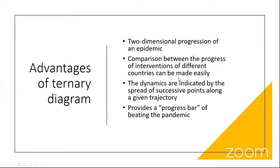What are the advantages of the ternary diagrams? The ternary diagram presents a two-dimensional progression of the epidemic, showing simultaneous plotting of number of cases, number of recoveries, and number of deaths. We can also compare different regions in terms of their progress, since we have a specific target in this ternary diagram. The spread of successive points along the given trajectory indicates the dynamics. Finally, it provides a progress bar — we have a certain point of origin and a certain point of success for the epidemic, in this case COVID-19.